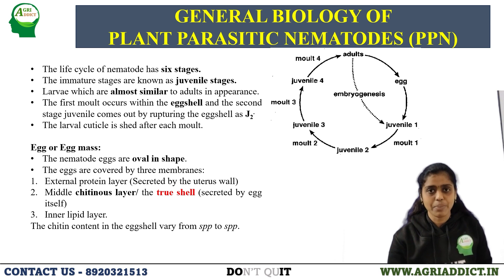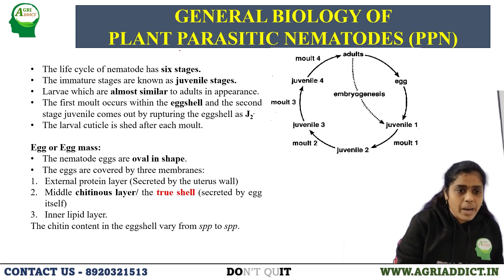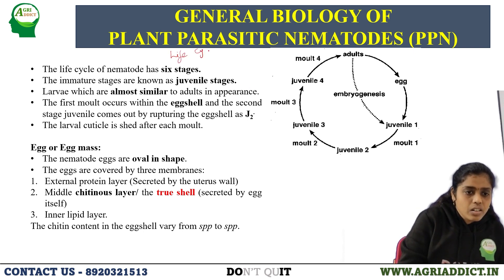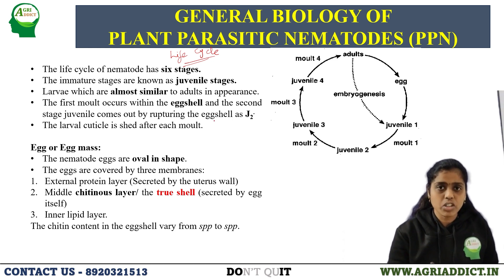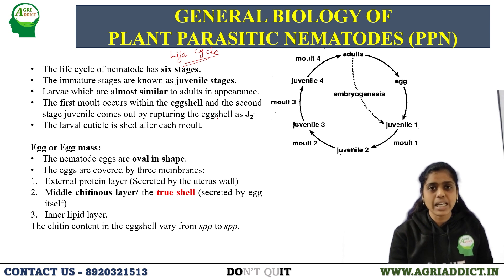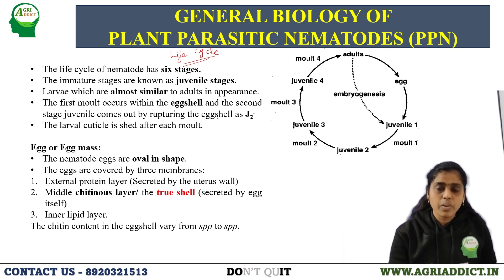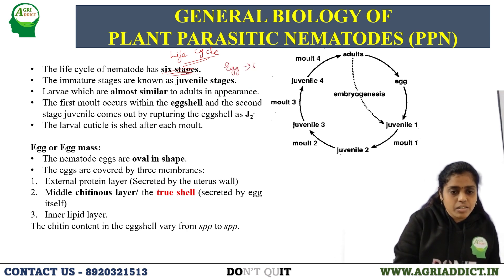Biology of Plant Parasitic Nematodes. When we hear the term biology, what comes to mind is life cycle. When someone asks you to explain the biology of an insect, you explain egg, larva, pupa, adult - those stages. In the same concept, when we take the nematode, the life cycle mainly comprises six stages: egg, four juvenile stages, and adult stage.